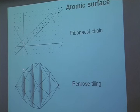The atomic surface for the Penrose tiling is much more complicated. You can see four pentagons and two extra points.